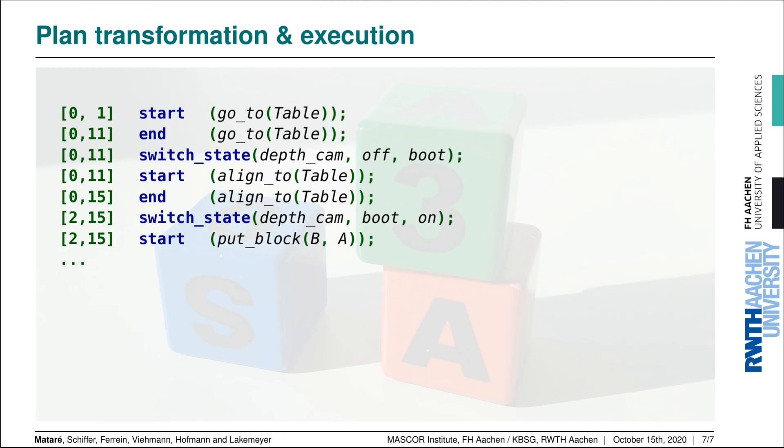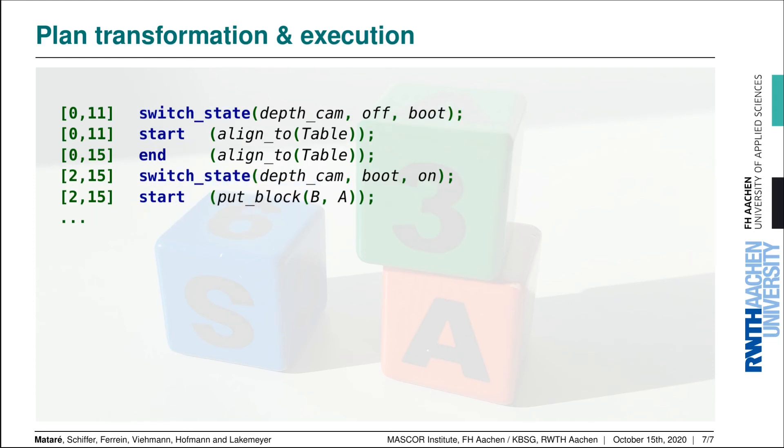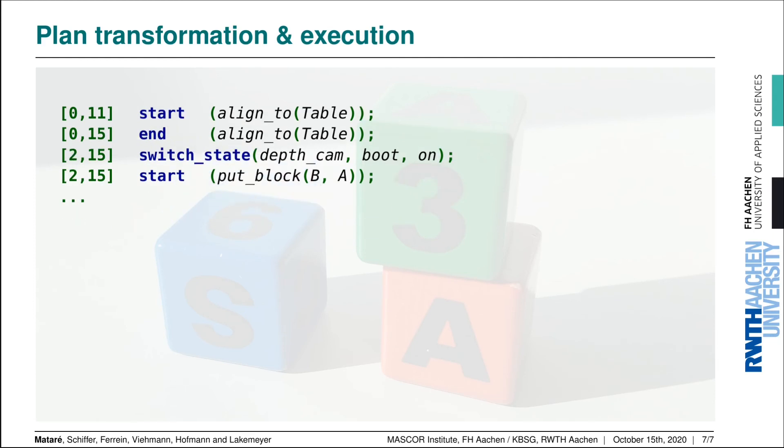Let's say we start executing the go_to action, it finishes, then we start booting the camera, start aligning to the table. And now something unexpected happens. Let's say at this point the depth camera has some kind of malfunction and doesn't finish its boot process and instead switches to an error state. This will trigger an immediate re-transformation.